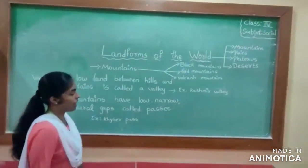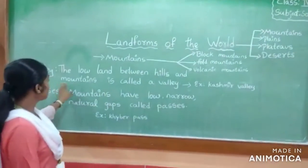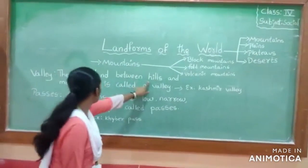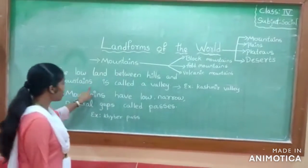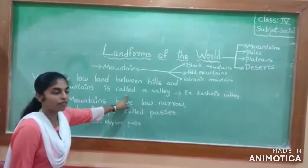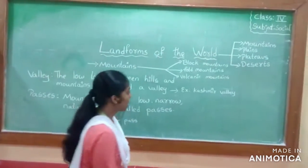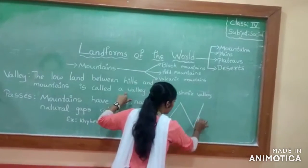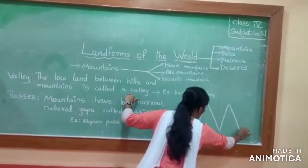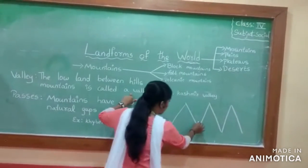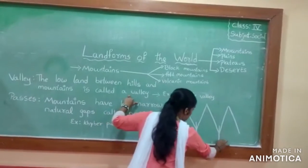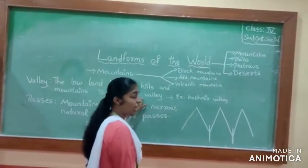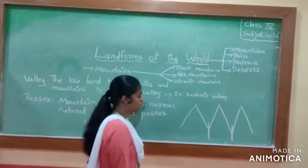Now, what is the meaning of a valley? A valley is nothing but the low land between the hills and mountains. So the low land in between the mountains — these gaps are called a valley.